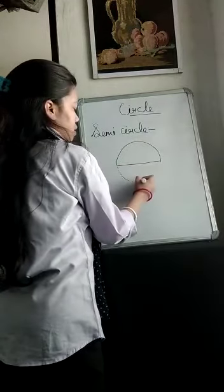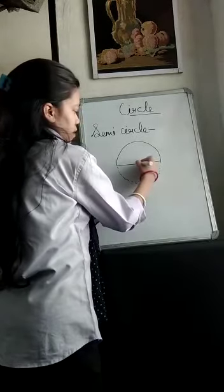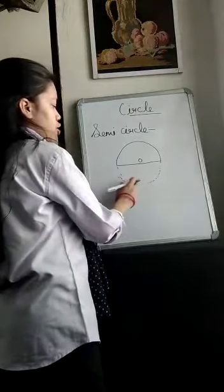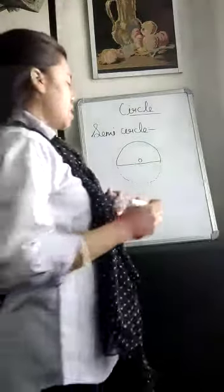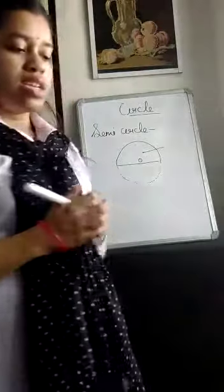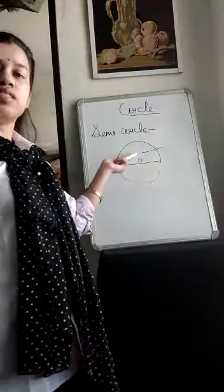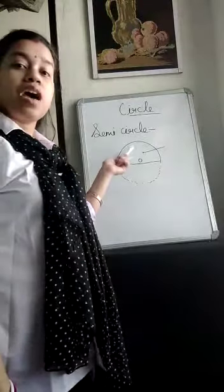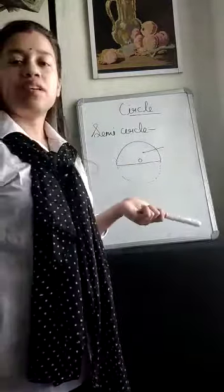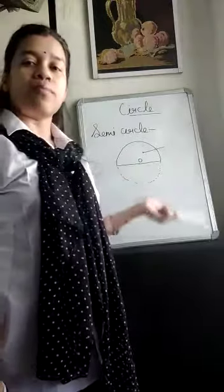Next is semicircle. First we draw half a circle, then the next part of the circle is dotted. The center point is O. Half of a circle is called a semicircle.